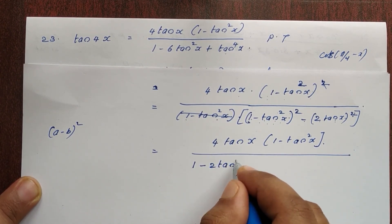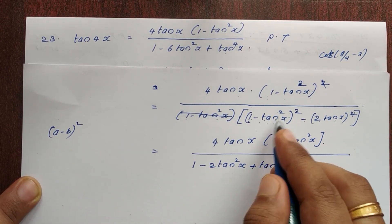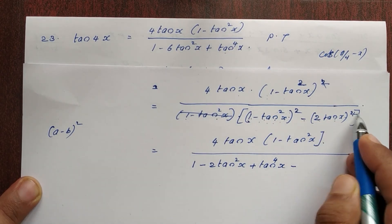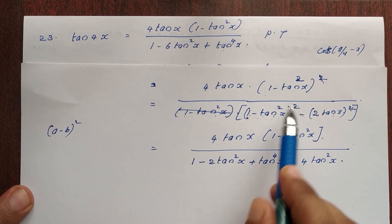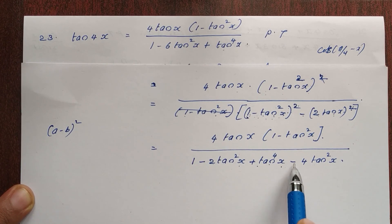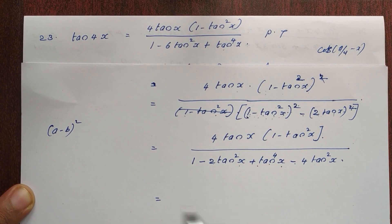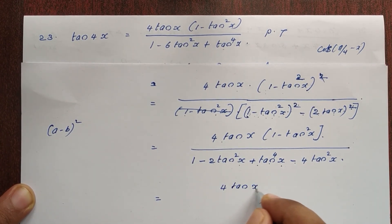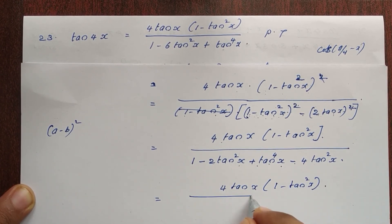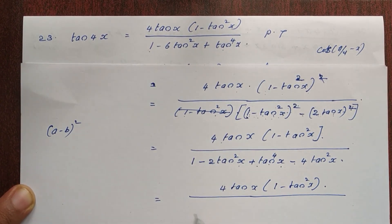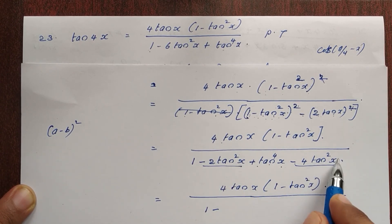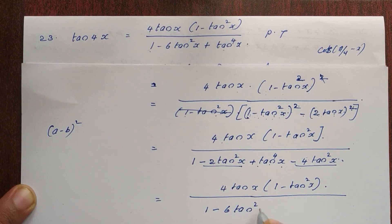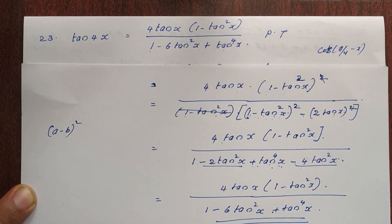Expanding the denominator: 1 minus tan square x the whole square is a minus b squared, giving 1 minus 2 tan square x plus tan raise to 4x. Then minus the square of 2 tan x over 1 minus tan square x gives minus 4 tan square x. Combining: 1 minus 6 tan square x plus tan raise to 4x. So the numerator is 4 tan x into 1 minus tan square x, and the denominator is 1 minus 6 tan square x plus tan raise to 4x. LHS equals RHS, hence it is proved.